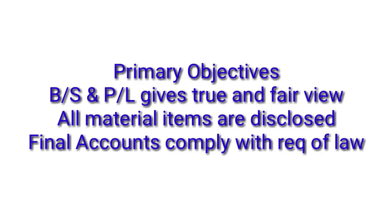True and fair view means that our balance sheet and P&L have all things recorded correctly and truthfully. The accountant who has written all things may have written them by mistake or intentionally — intentional errors we know as fraud. So one person is appointed to check and authenticate everything, and that person is called the auditor. The primary objective is that the balance sheet and profit and loss account show a true and fair view, all material items are disclosed, and final accounts comply with law.